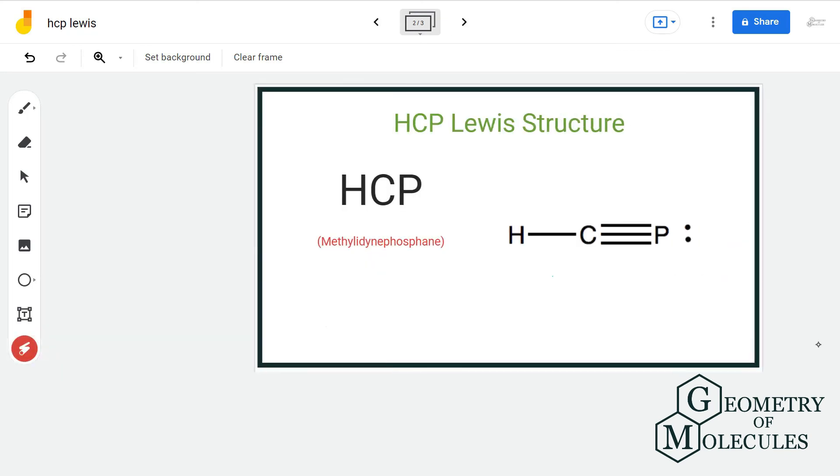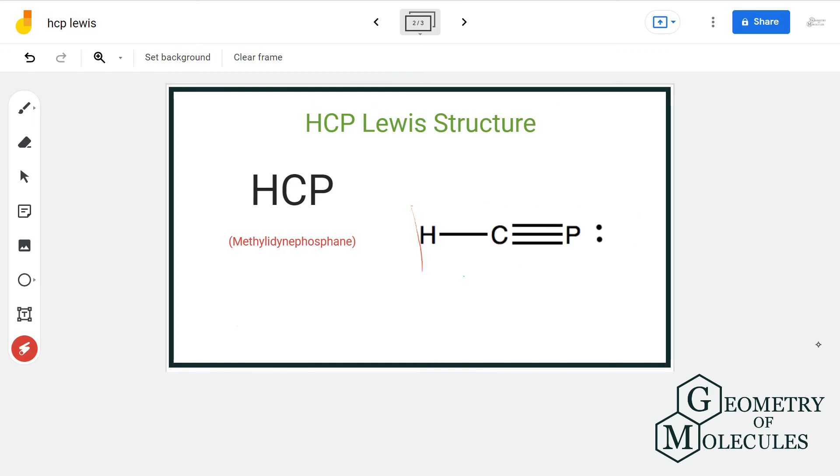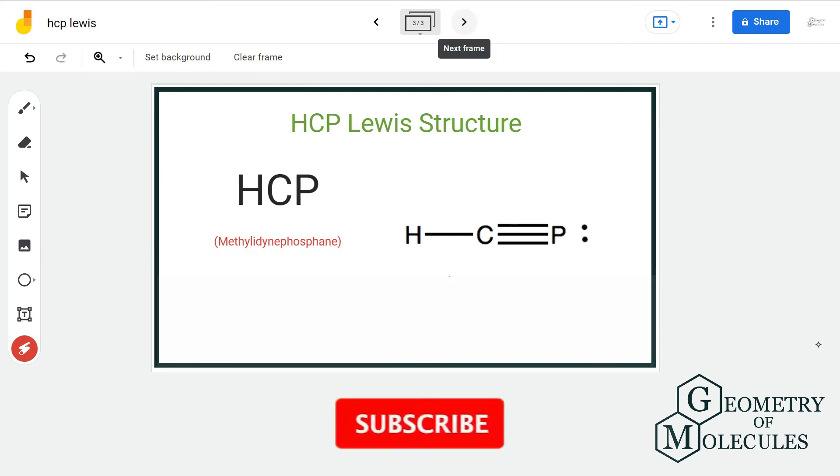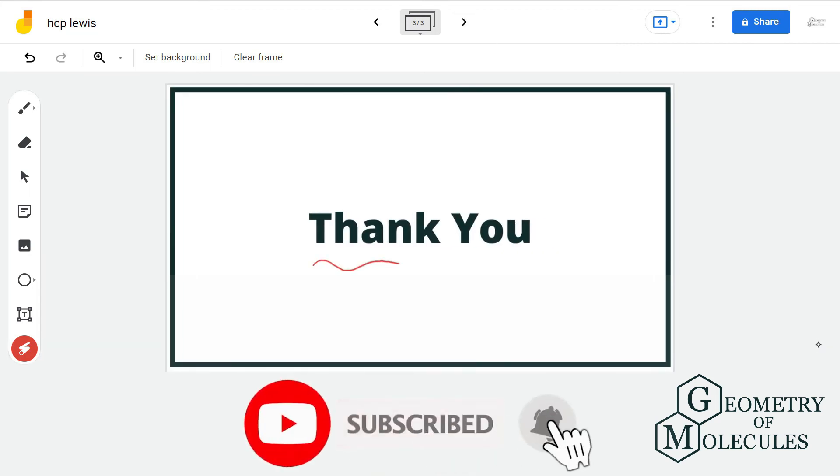Thus every atom in this molecule has complete octet and this is the final Lewis structure of HCP. For more such videos, make sure to subscribe our channel and thank you for watching.